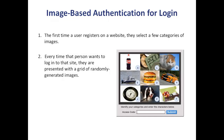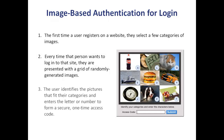Each time they go to log into that website, they are presented with a randomly generated grid of images — the Confident Image Shield. They simply identify the pictures that fit their chosen categories and enter the letter or number that appears on that picture to form a secure, one-time access code.